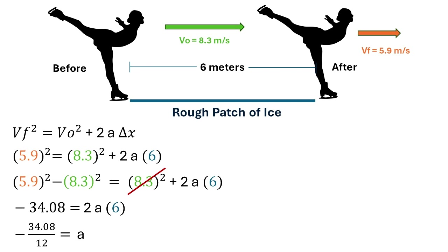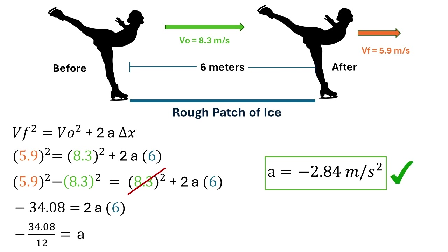Dividing by 12, we get that the acceleration is negative 2.84 meters per second squared — that's the rate of change of the velocity. Note that the acceleration is negative. When the acceleration is in the opposite direction to the velocity, the magnitude of the velocity decreases.